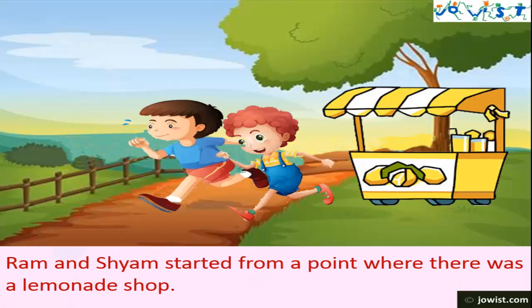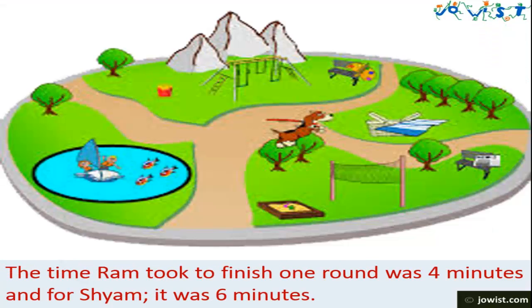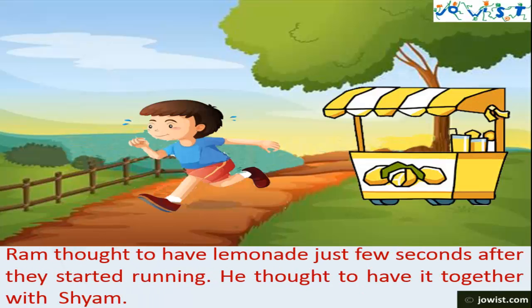Ram and Shyam started from a point where there was a lemonade shop. The time Ram took to finish one round was 4 minutes and for Shyam it was 6 minutes. Ram thought to have lemonade just few seconds after they started running. He thought to have it together with Shyam.